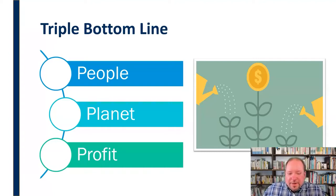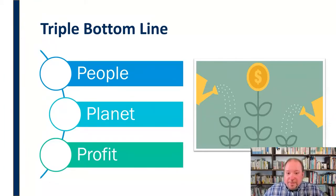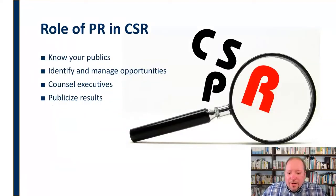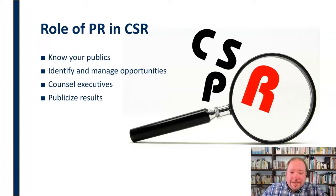Socially responsible corporations — CSR — will be concerned with all three parts of the triple bottom line: the people, the planet, and the profit, and how they intersect and are affected by that organization. When we narrow in on how public relations is affected by all this, public relations and CSR comes down to knowing your publics, identifying and managing opportunities, counseling executives, and publicizing those results.